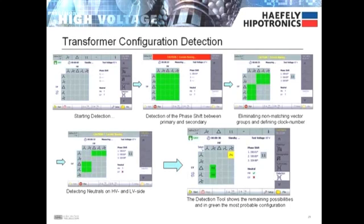At the start of the configuration detection, all configurations are possible as shown in green. Next, the 2293 detects the phase shift and eliminates non-matching vector groups. Next, the 2293 detects whether neutrals are present on the high voltage or low voltage side. Next, the 2293 will display the most probable remaining possibilities.